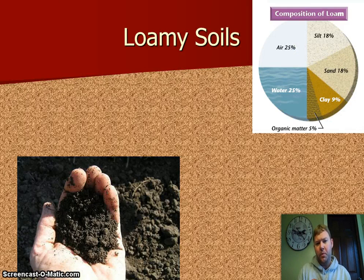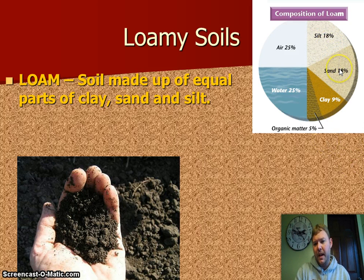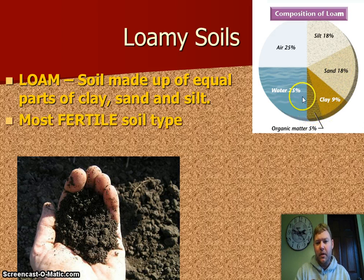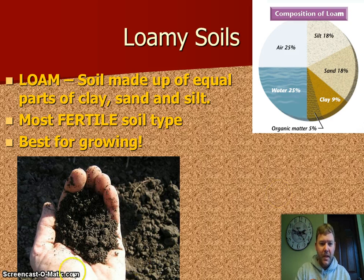Let's talk about some common soils. Number one: loamy soils. Loamy soil is made up of equal parts of clay, sand, and silt — about eighteen percent silt, eighteen percent sand, not a whole lot of clay, plus some organic material, twenty-five percent water, and twenty-five percent air. It's the most fertile soil we have, the best for growing crops and plants, nice and crumbly with a rich color.